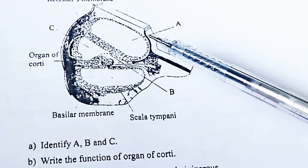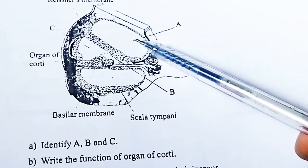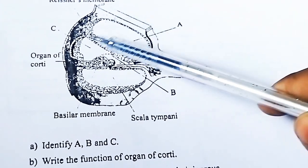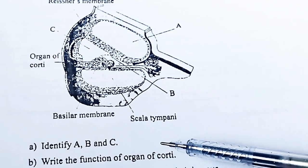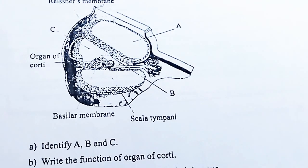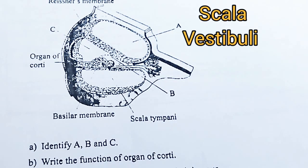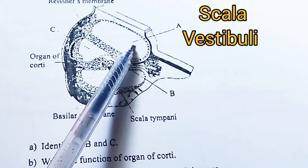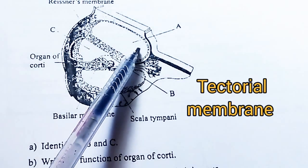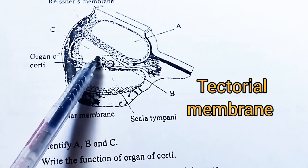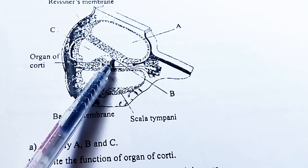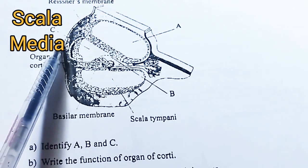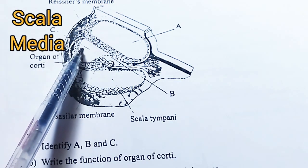Observe the figure of the ear. Identify A, B, and C. Write the function of the organ of Corti. Part A is Scala vestibuli, Part B is the Tectorial membrane, Part C is Scala media.